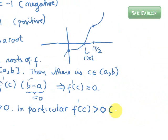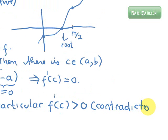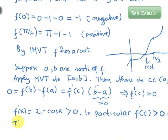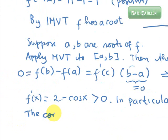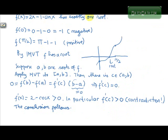So contradiction. Therefore, we have the conclusion. And the conclusion follows, which is that f has exactly one root.